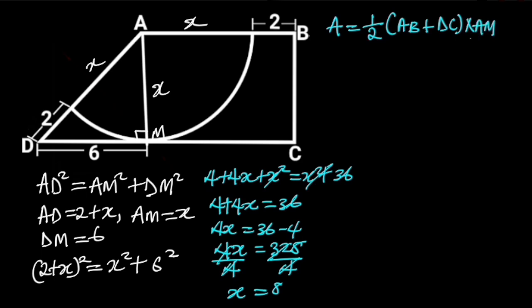From the figure, AB is equal to X plus 2. But X is equal to 8, so AB will be equal to 8 plus 2, which is equal to 10.